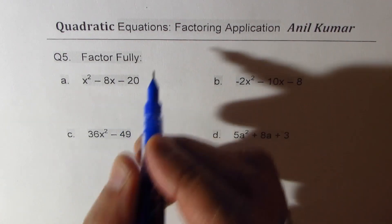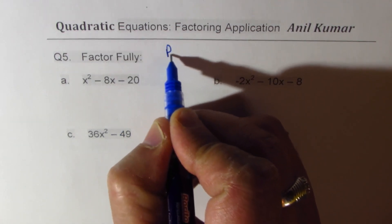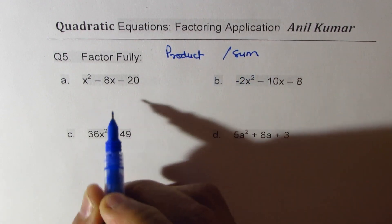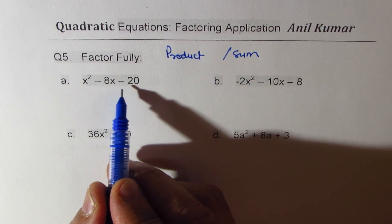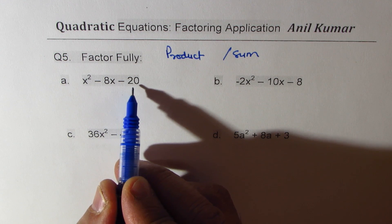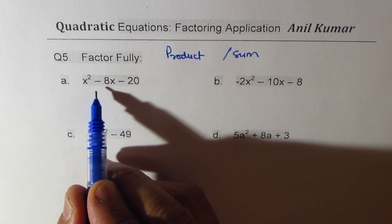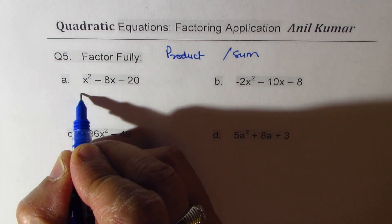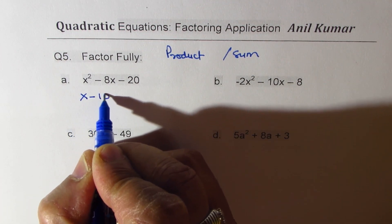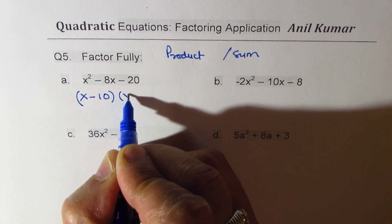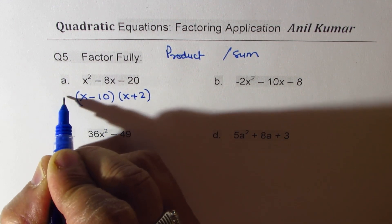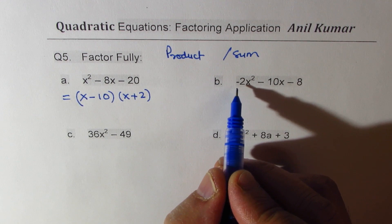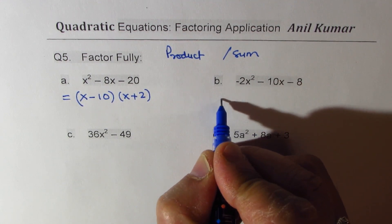We are going to apply the product and sum method. We're looking for two numbers whose product is -20 and sum is -8. Since one is positive and one is negative, we get (x - 10)(x + 2). These two numbers satisfy the condition.